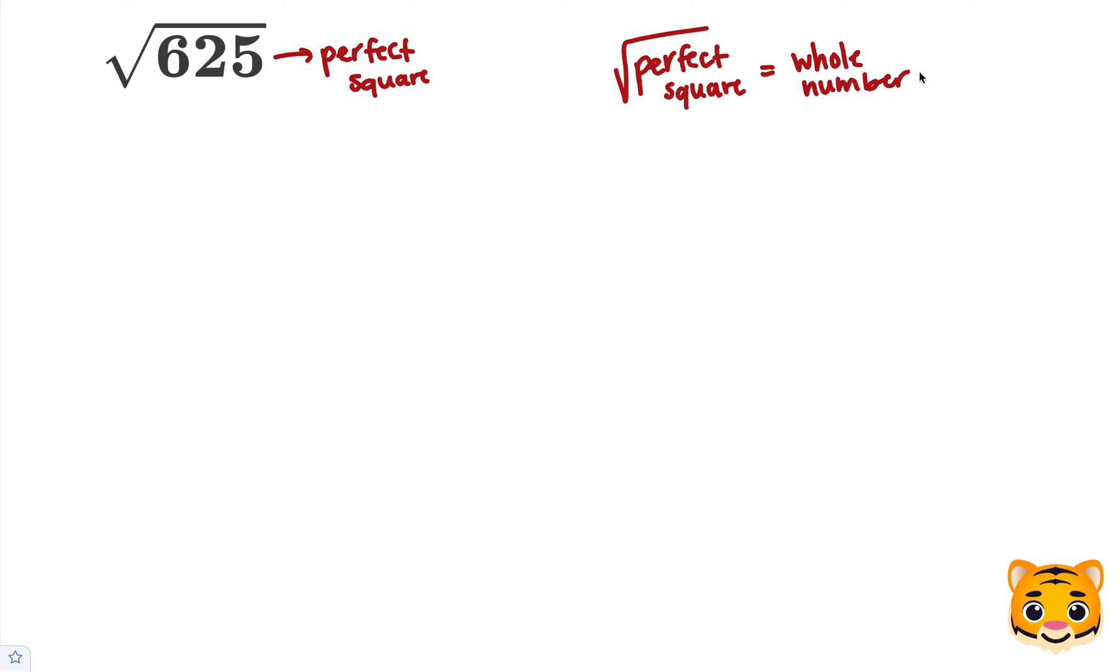To find the square root of 625 we can break 625 up by using a math rule. Let's review this rule now.